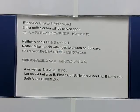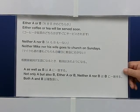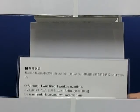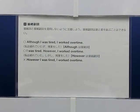相関接続詞が主語になるとき、動詞の一致に注意。A as well as BはAに一致する。Not only A but also B、Either A or B、Neither A nor BはBに一致する。Both A and Bは複数扱い。接続詞と接続副詞を混同しないように注意しよう。